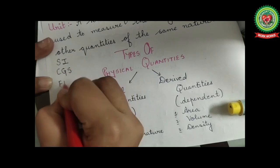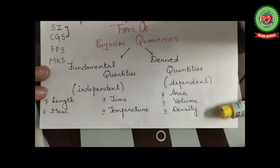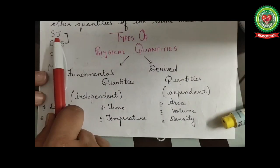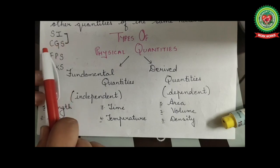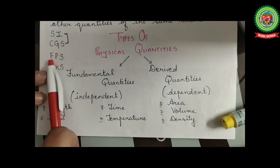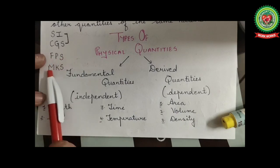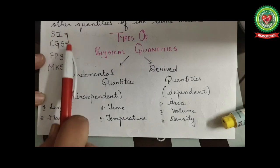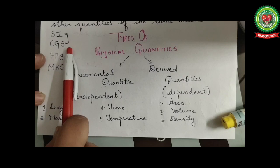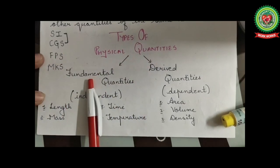There are four systems of units: SI units, CGS units, FPS units, and MKS units. SI stands for Standard International units — the units accepted by the majority of people throughout the world. CGS stands for centimeter-gram-second units. FPS, used in ancient times, stands for foot-pound-second. MKS stands for meter-kilogram-second. We generally use SI and CGS units in physics.